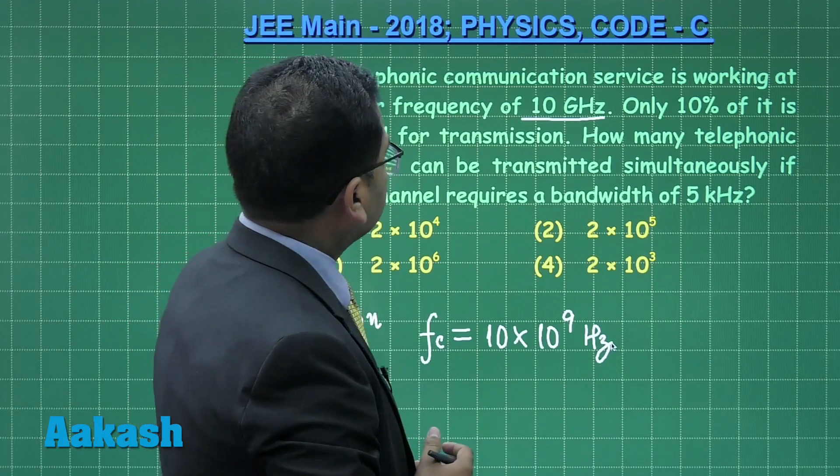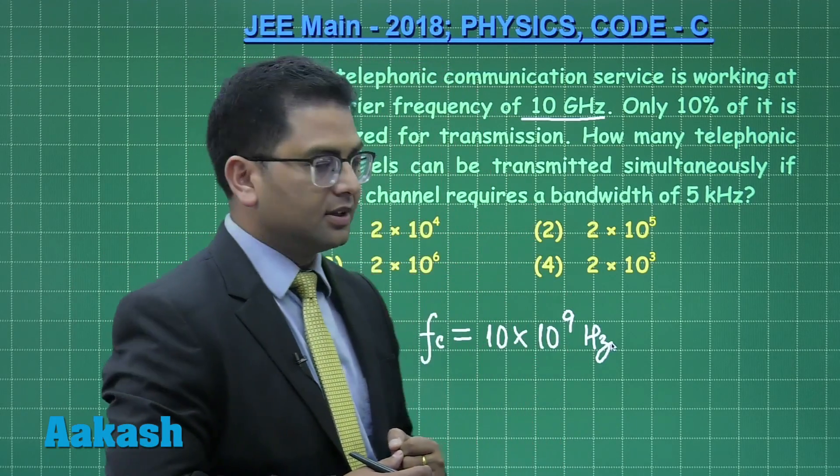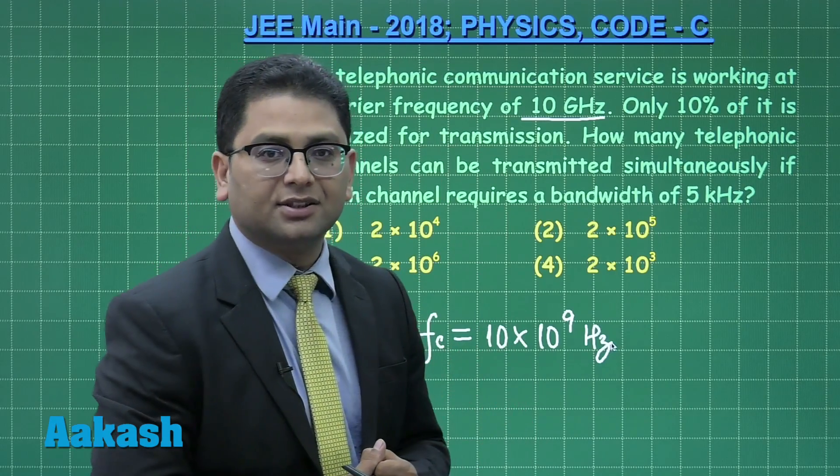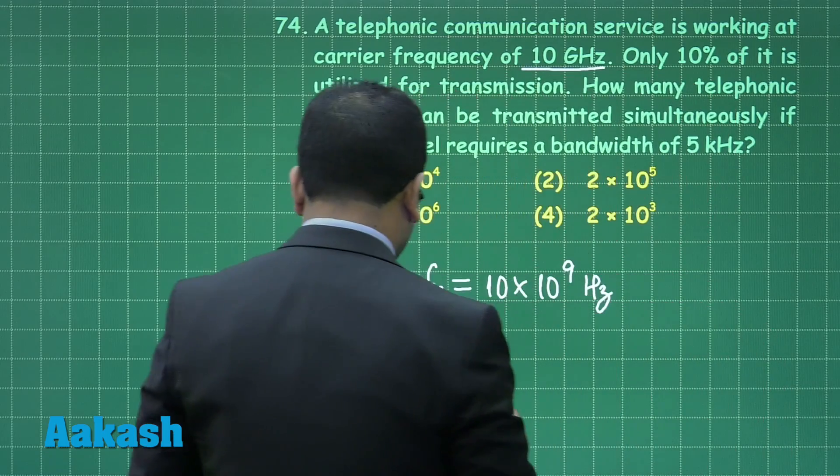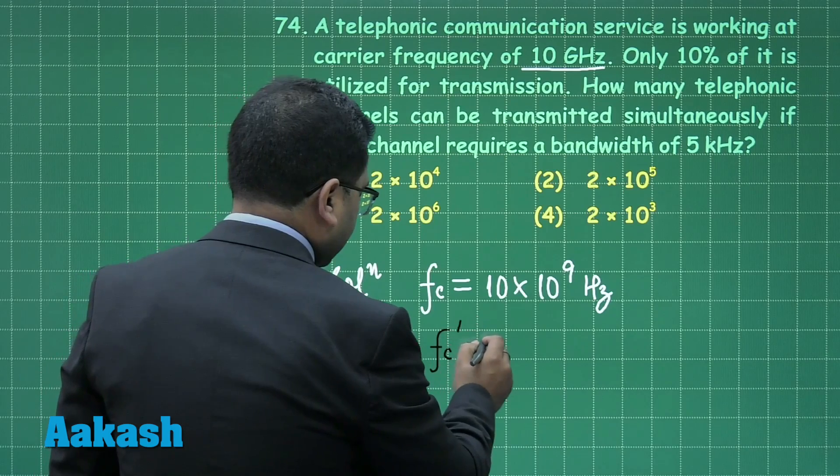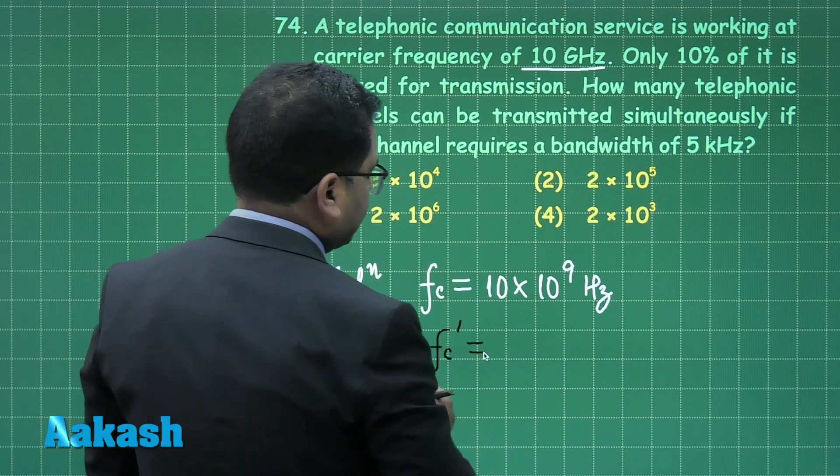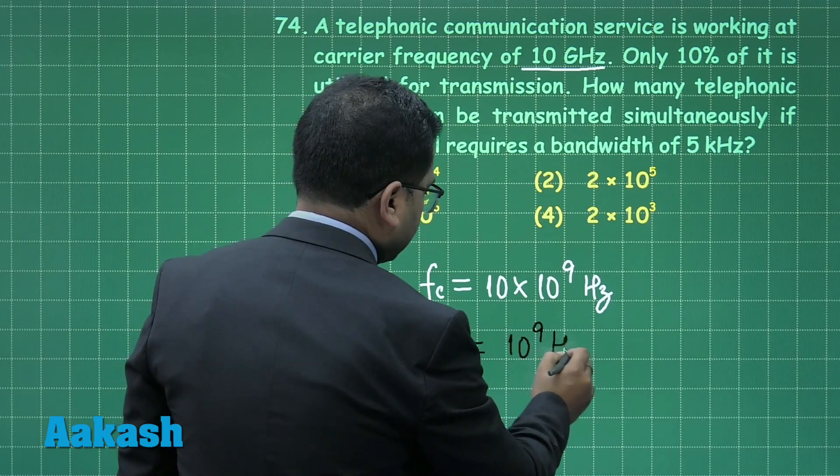Only 10% of it is utilized for transmission. So the remaining 90% is wastage. What is being utilized for transmission? That is F_C dash. Only 10% is used, so quite obviously that will be 10 raised to the power 9 hertz.